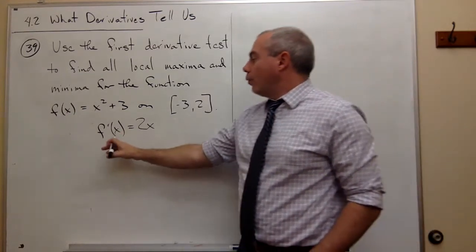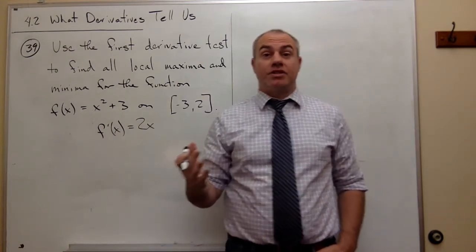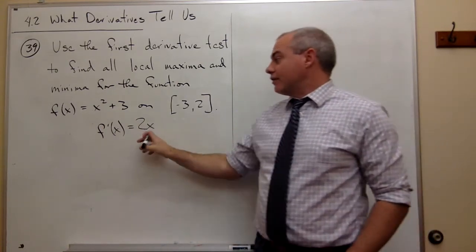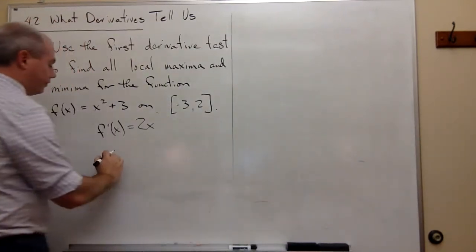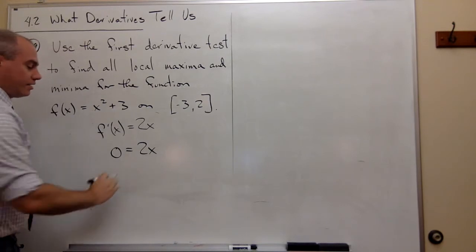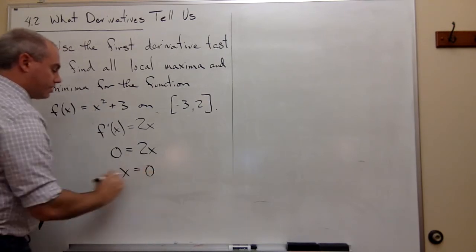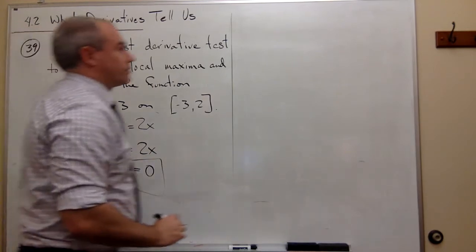Now I want to know where the critical points are. Critical points of a function are where the derivative equals zero or is undefined. This is never undefined, so it's just where it equals zero. Setting it equal to zero: 0 = 2x, so x = 0. This is my critical point, x = 0.